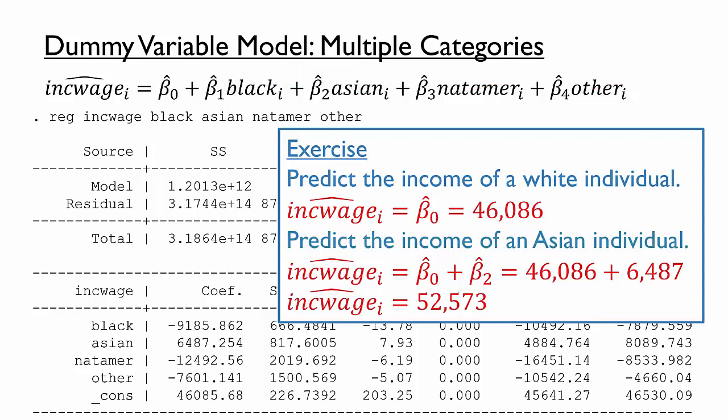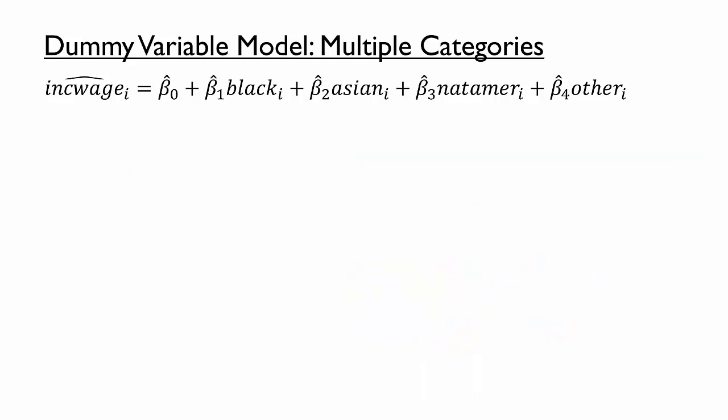Let's conclude by thinking about how to interpret the coefficients in a dummy variable model with multiple categories. Note that the average income of whites, the model's omitted race category, is also the model's intercept term. Next, notice that the value we added to the average white income to get the average Asian income is also the coefficient on the Asian variable. In other words, this coefficient represents the Asian-white difference in average incomes. This is no coincidence. This exercise illustrates two points about interpreting coefficients in dummy variable models with multiple categories.